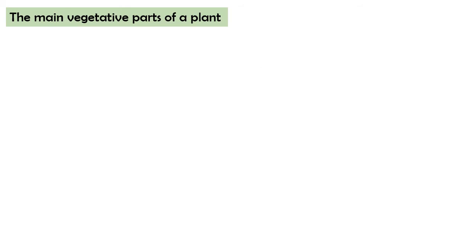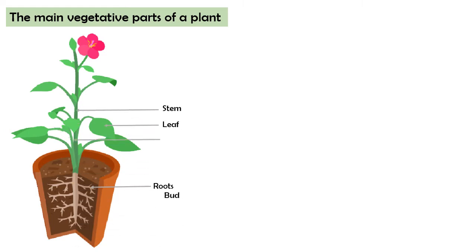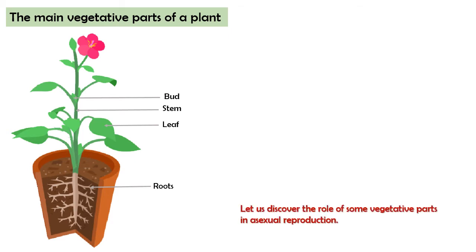The main vegetative parts of a plant are roots, leaf, stem, and bud. Let us discover the role of some vegetative parts in asexual reproduction.